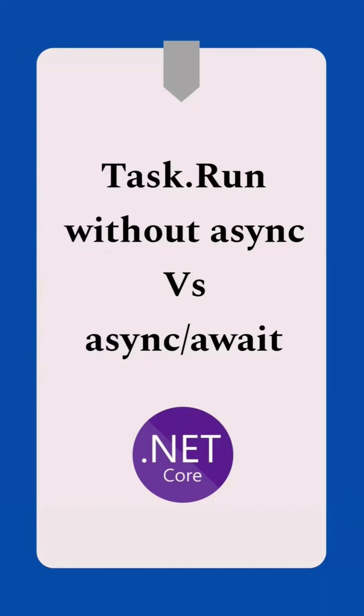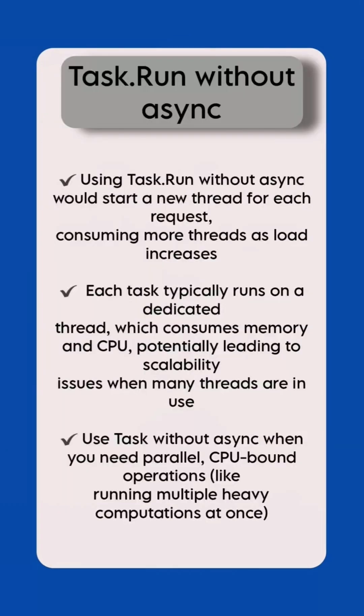What is the difference between Task.Run without async versus async/await in .NET Core? Using Task.Run would start a new thread for each request, consuming more threads as load increases. Each task typically runs on a dedicated thread, which consumes memory and CPU, potentially leading to scalability issues when many threads are in use.